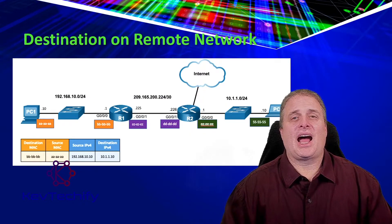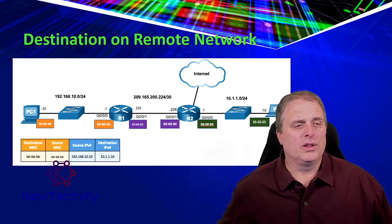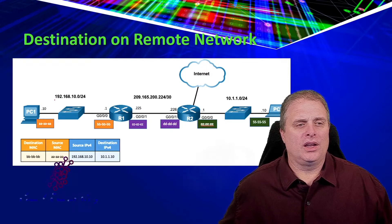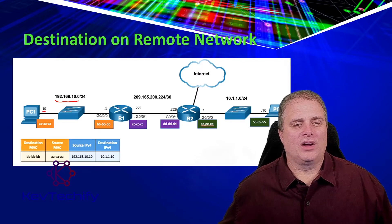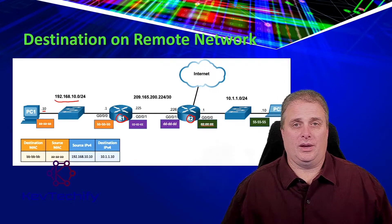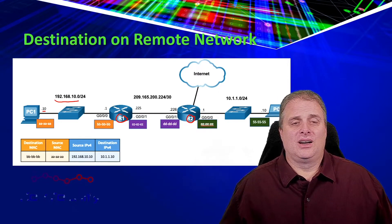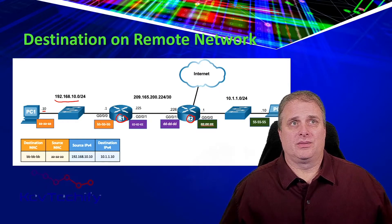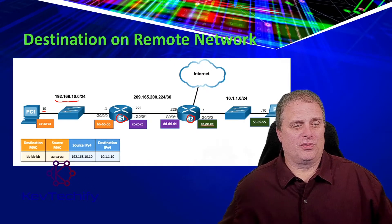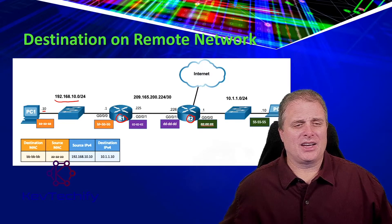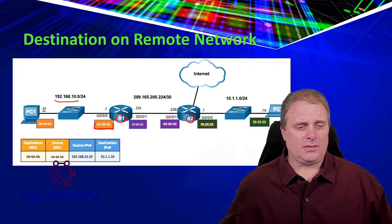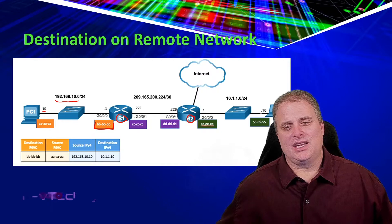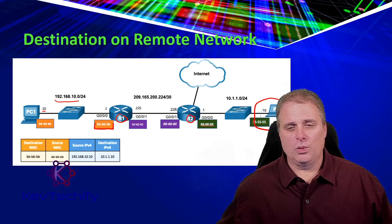When that destination IP address is on a different network, if we look here, PC1 has 192.168.10.10 as its IP address. We have to go through one router, then a second router — so it's multiple networks away. What's going to happen is, when we first start off, the destination MAC address is the MAC address of our default gateway — that's how we get off of our network. But the destination IP address is the destination of PC2 way over here.